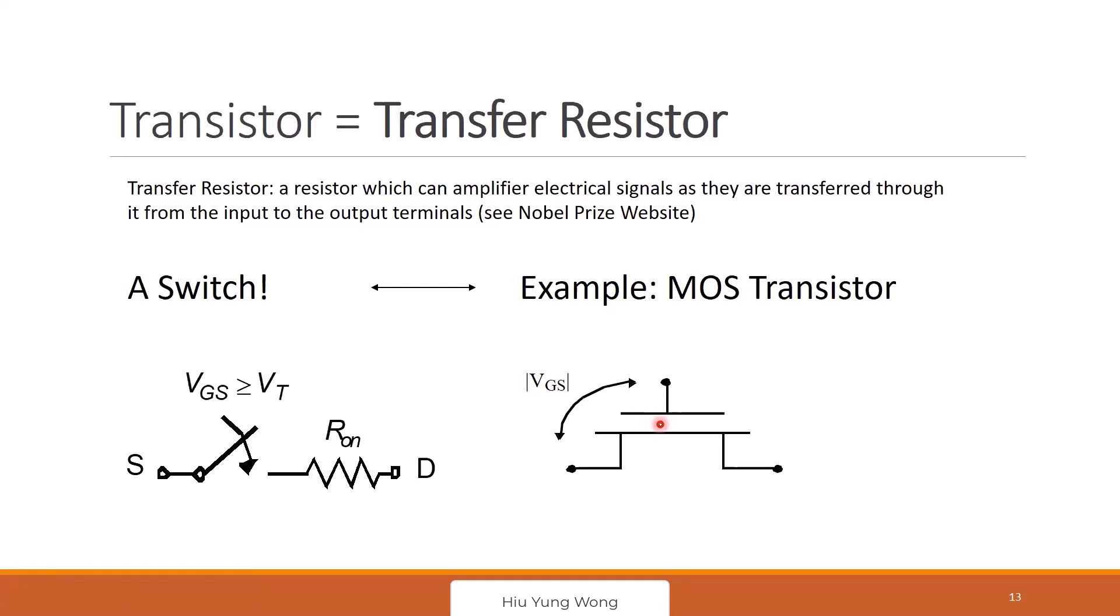Transistor is transfer resistor. I know you all understand what is transistor, but one very important concept you need to put in the center of your heart. When you think about this, it's talking about you change the resistance of source drain by using gate voltage. So this transistor is nothing but just a resistor. And that's why later when we derive the equivalent resistor. We use the gate to control the source drain resistance. That's why it's called transistor.